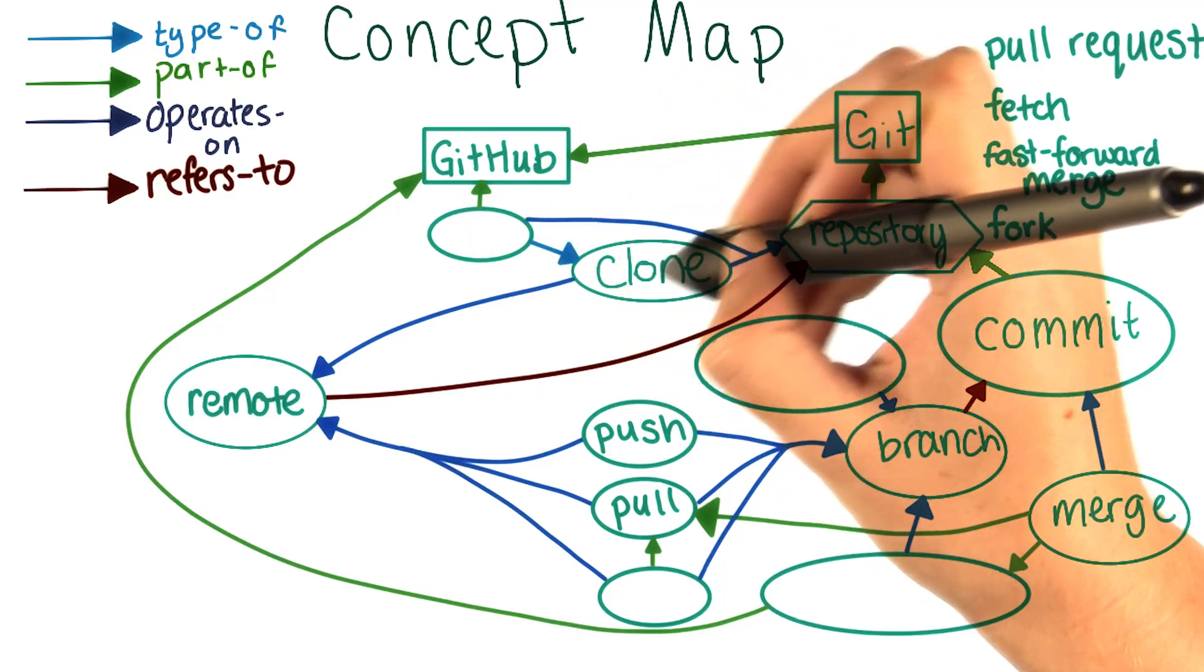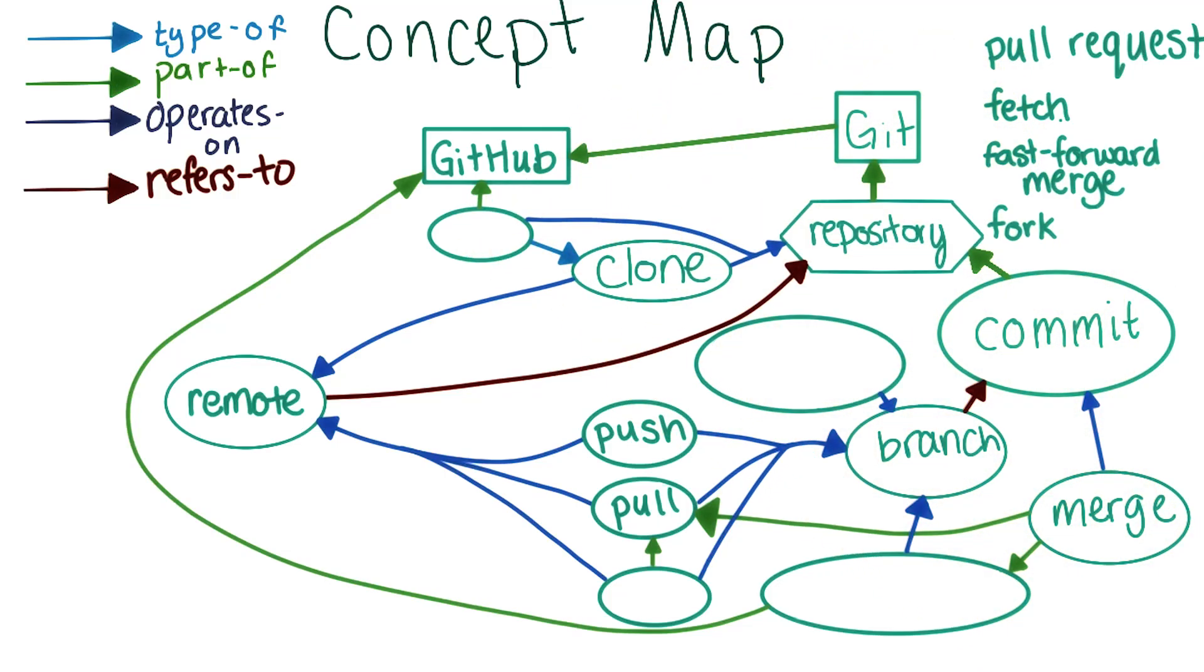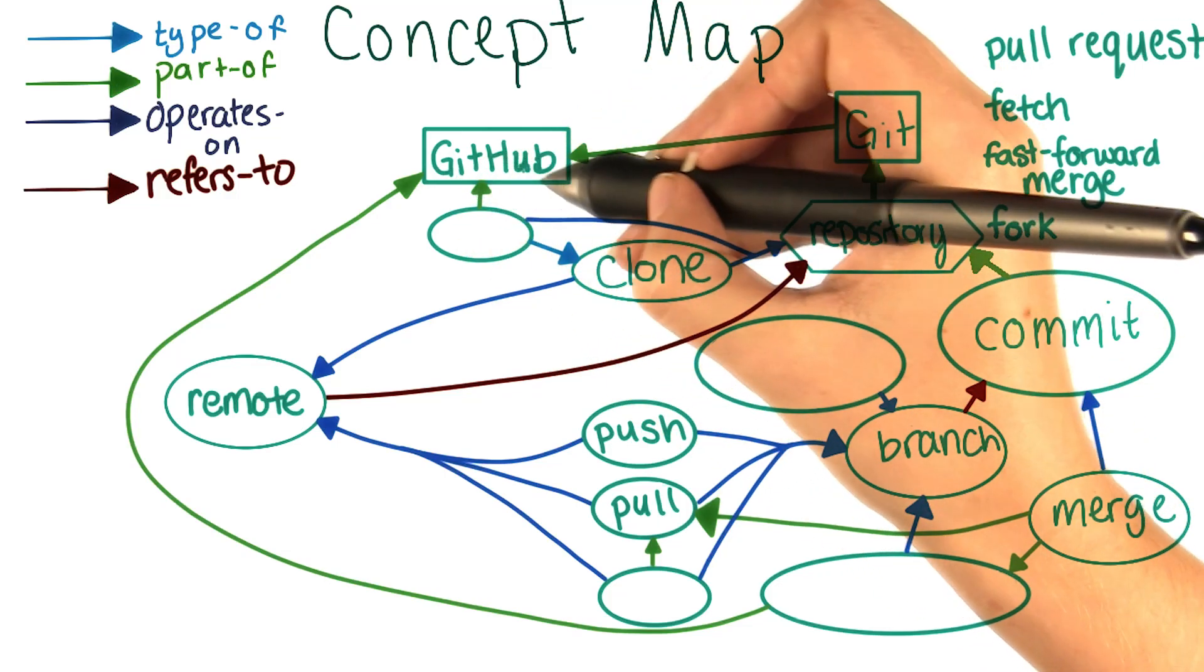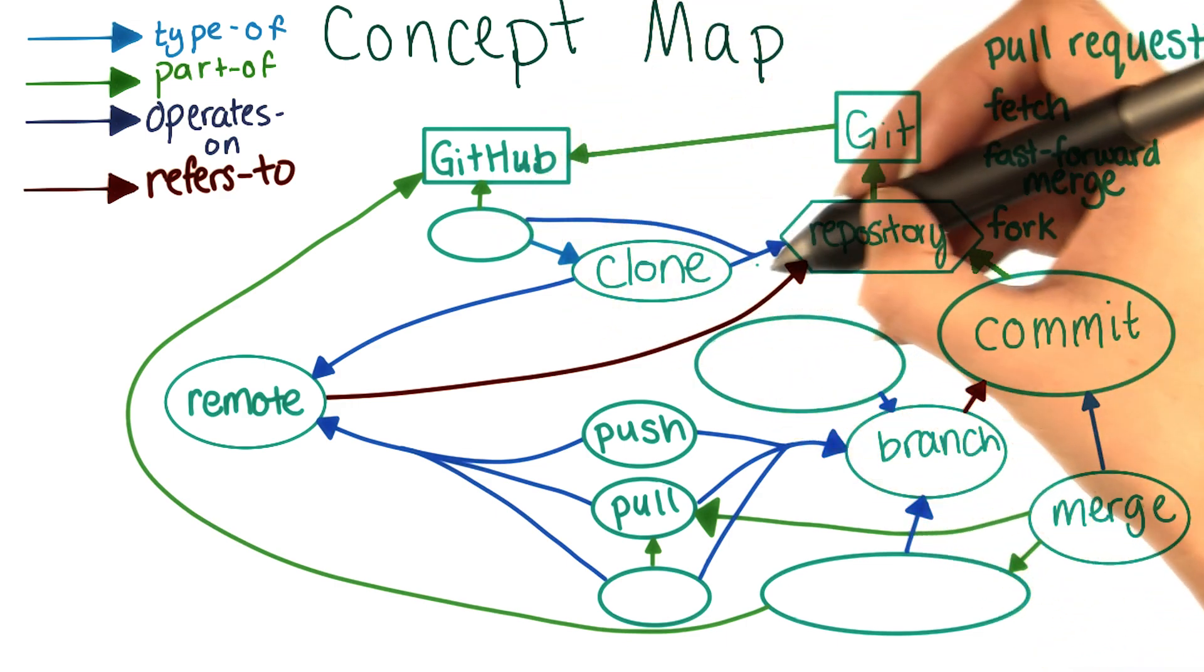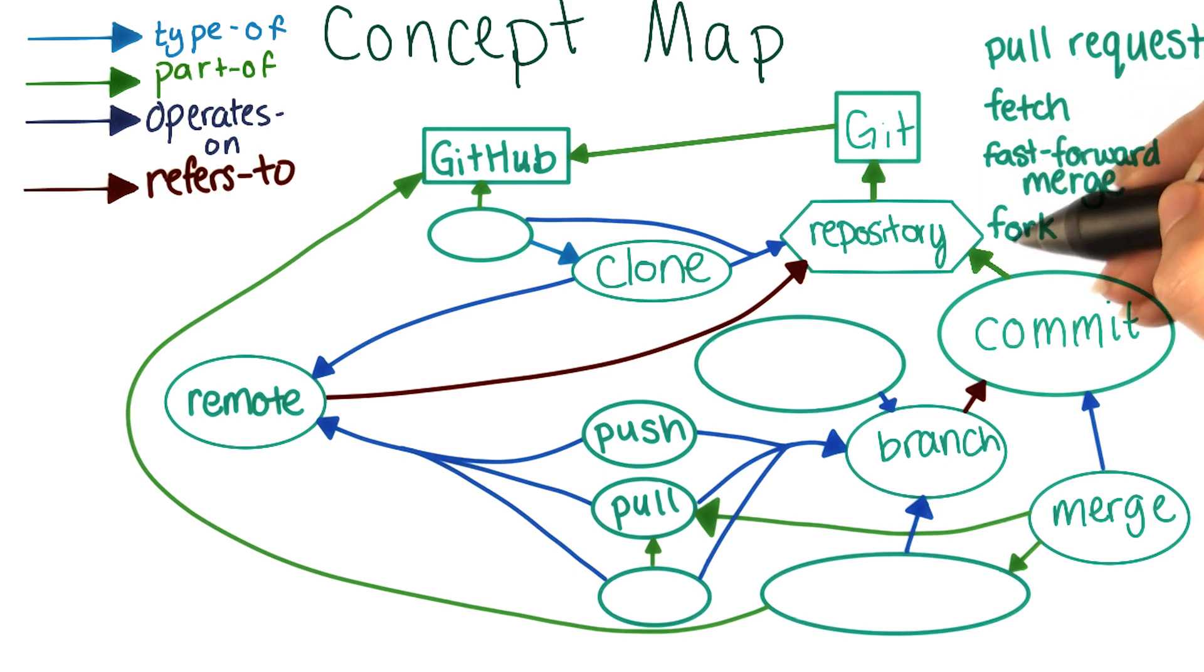The thing that goes here has to be a type of clone, and it's a part of GitHub. So it'll be something that's GitHub specific, and not a part of the original Git system. It's also going to be something that operates on a repository. Of these options, the only one that fits is fork.